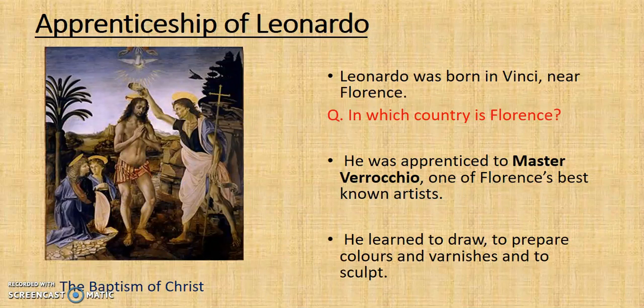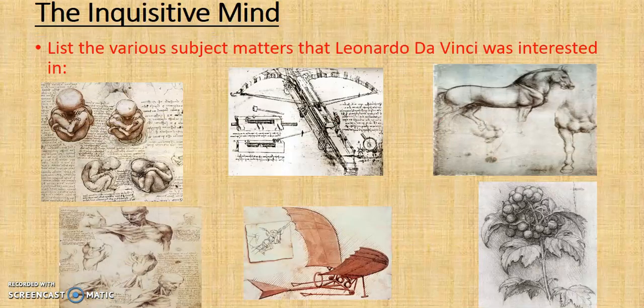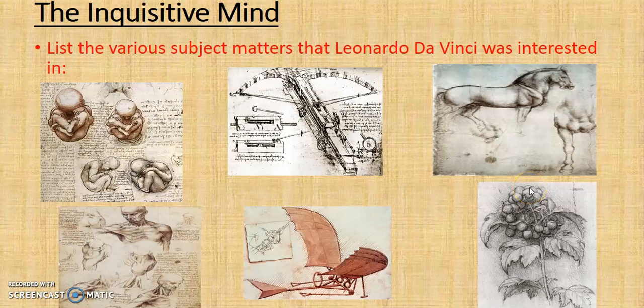Verrocchio taught Leonardo how to draw, to prepare colours and varnishes, and to sculpt. We have an idea of the breadth of his apprenticeship. From his notebooks that are left behind we know he had an inquisitive mind — we see animals, fruit, anatomy, the body, a precursor to the plane with his flying machines, and a crossbow. He really was one of the most inquisitive minds around, and that was the key to the renaissance: inquisitive minds who weren't afraid to ask questions.